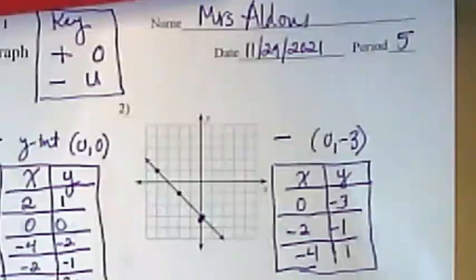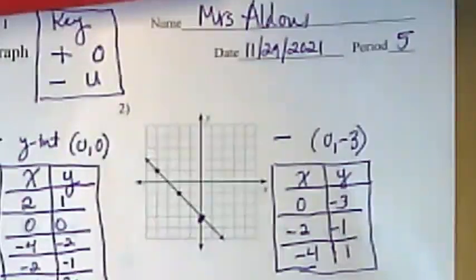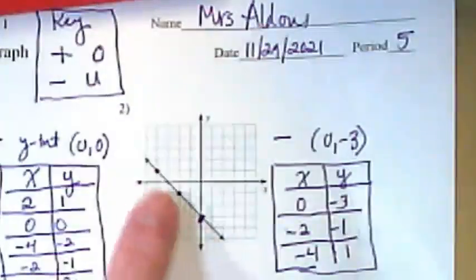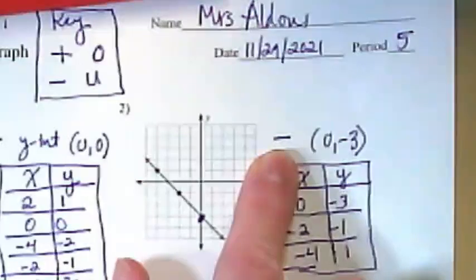We've done a lot of work on these graphs that we started yesterday, and we looked for a few different things. We looked for what kind of slope the line itself had, and we put a positive or a negative for most of them.